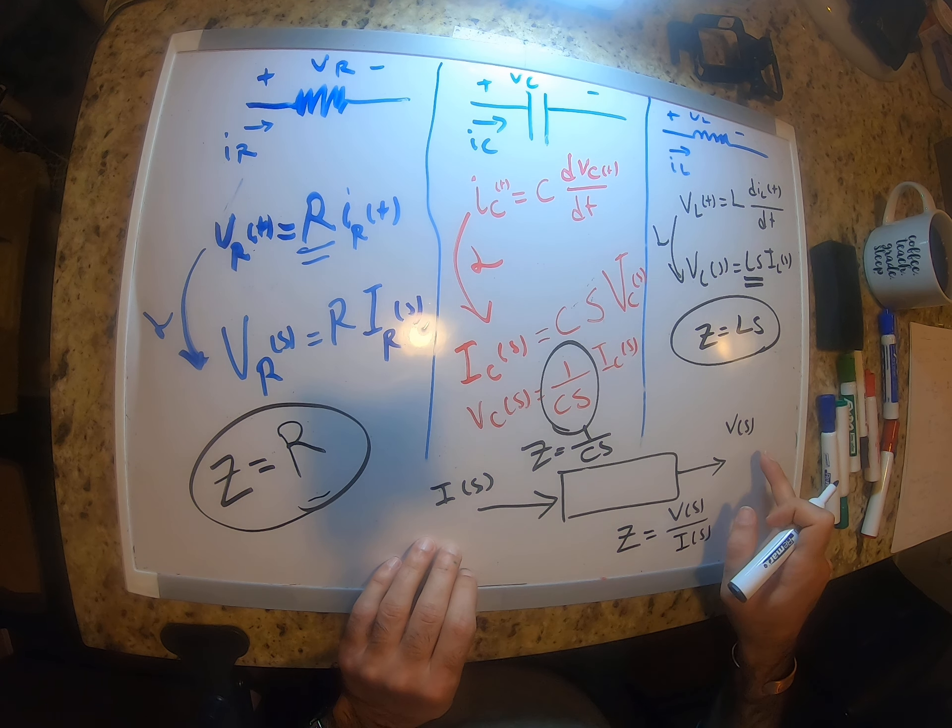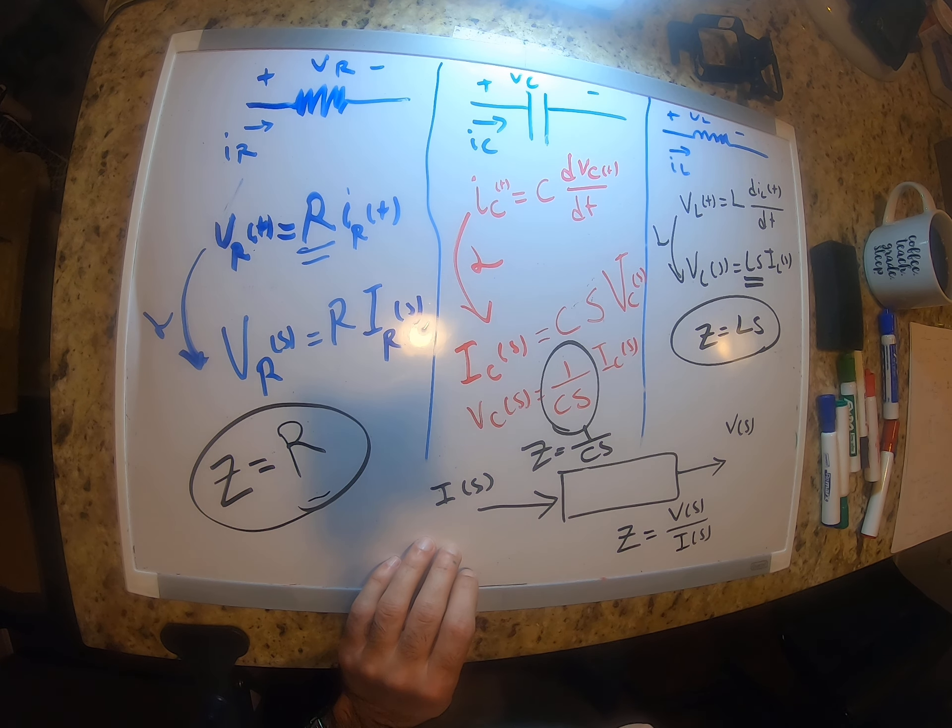For an inductor, the transfer function is just basically a constant which is equal to R. For a capacitor, Z is equal to 1 over CS, so we can assume that this transfer function is defined in the S domain using this term.